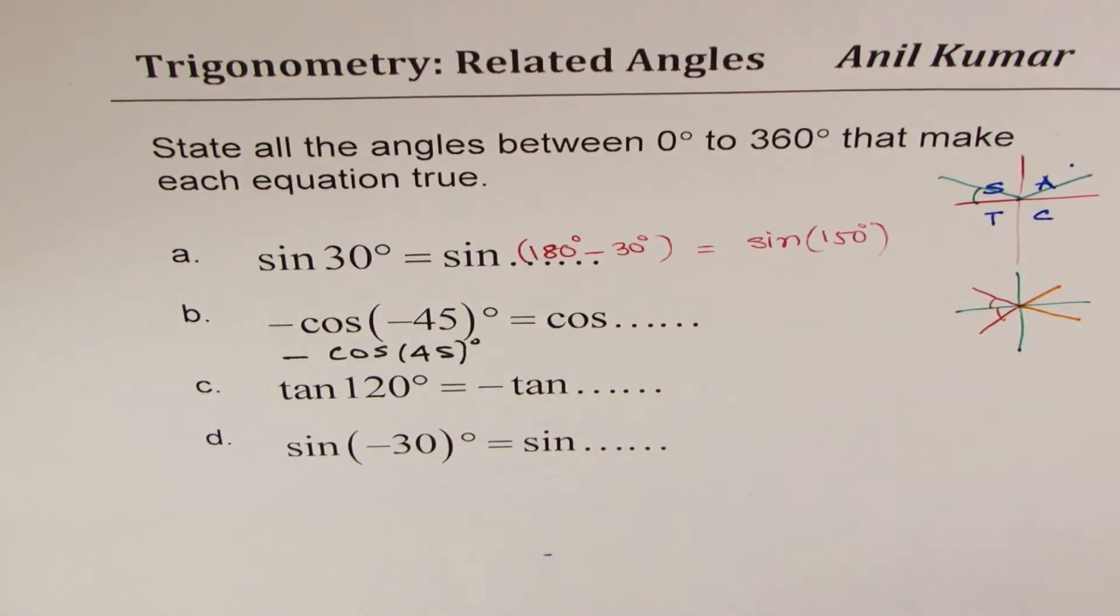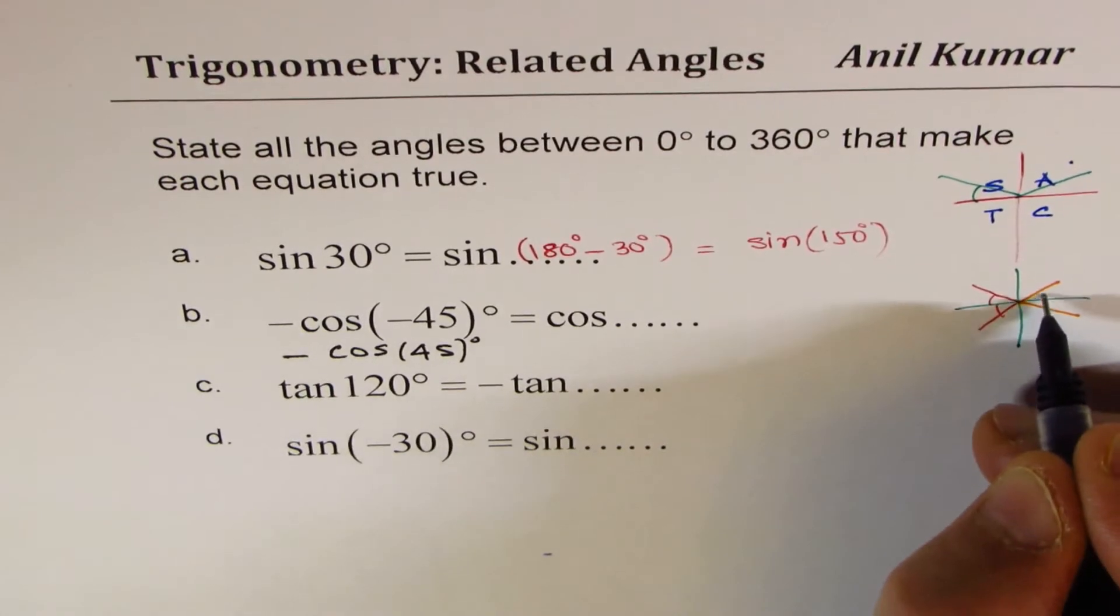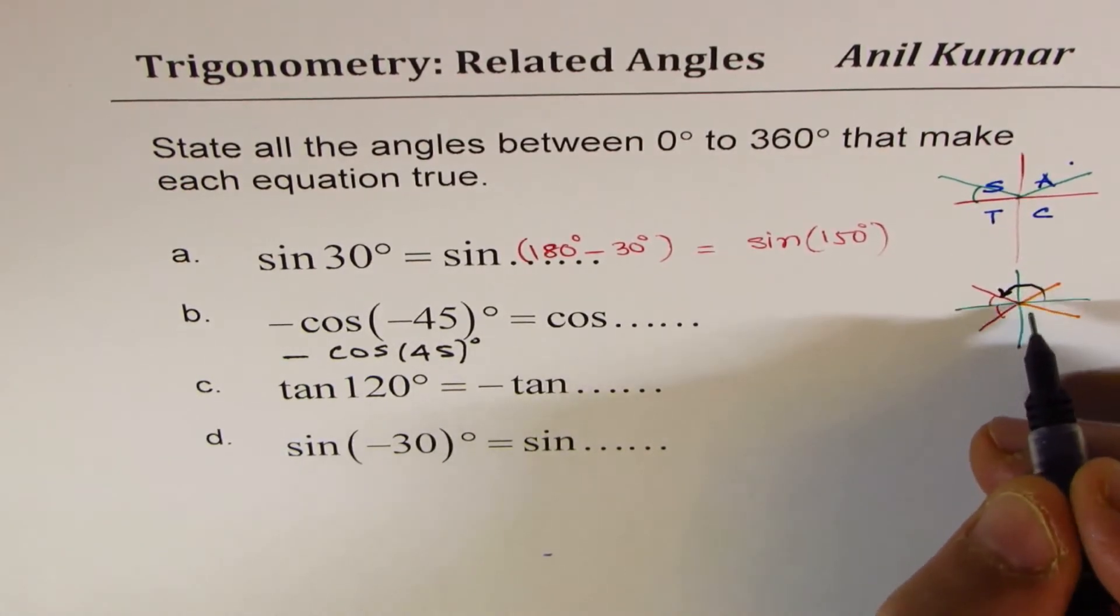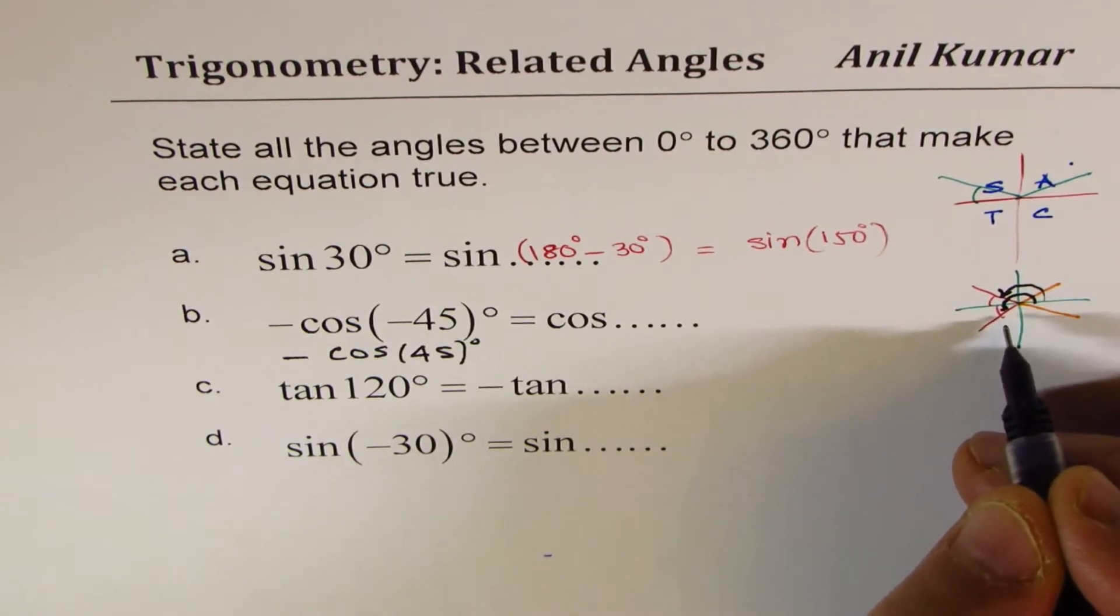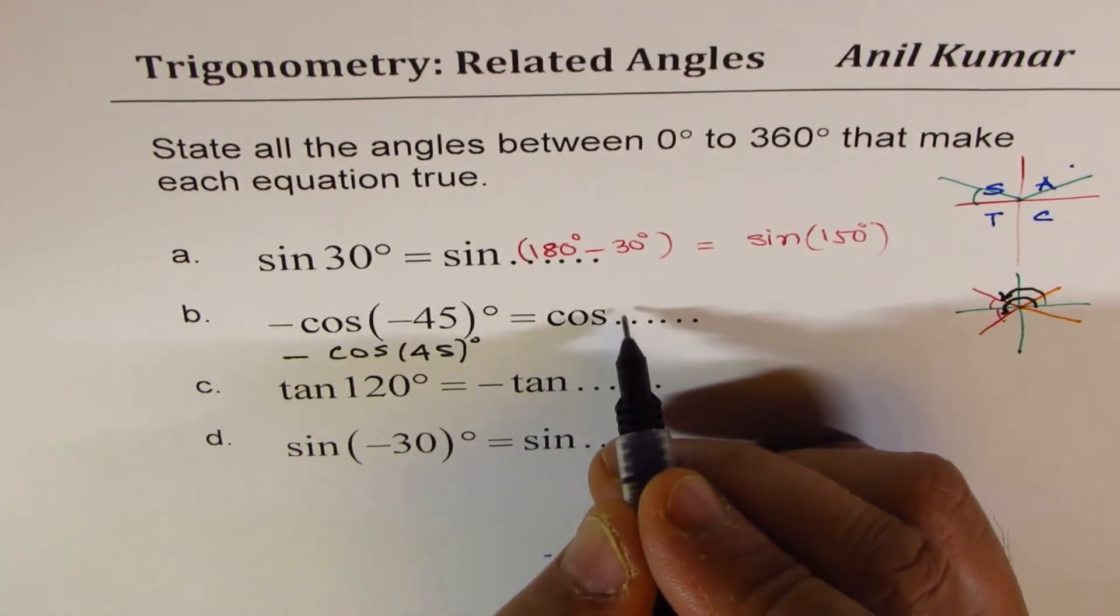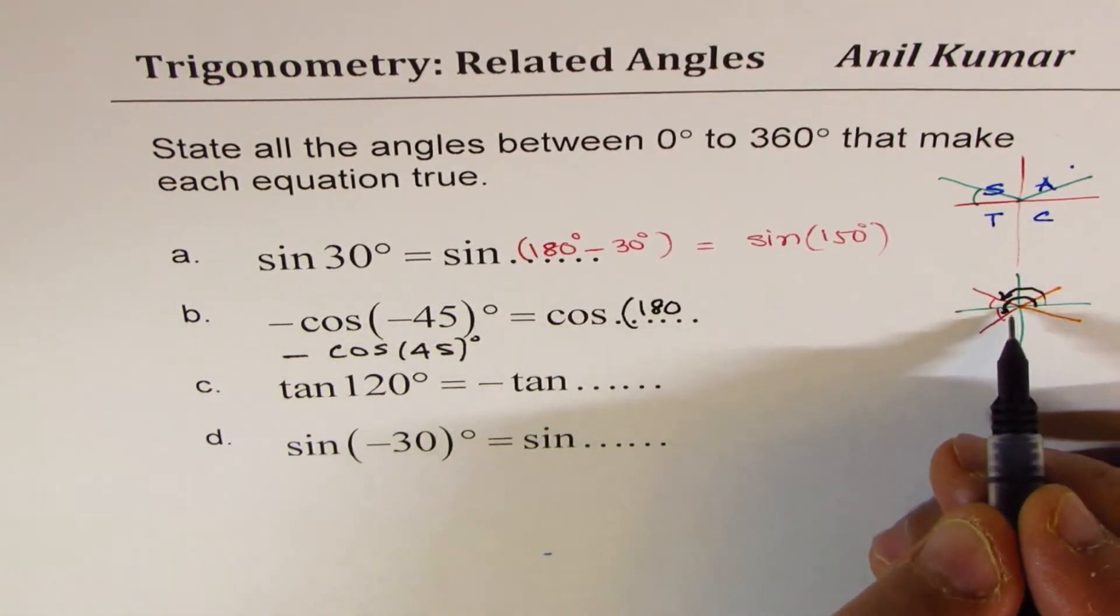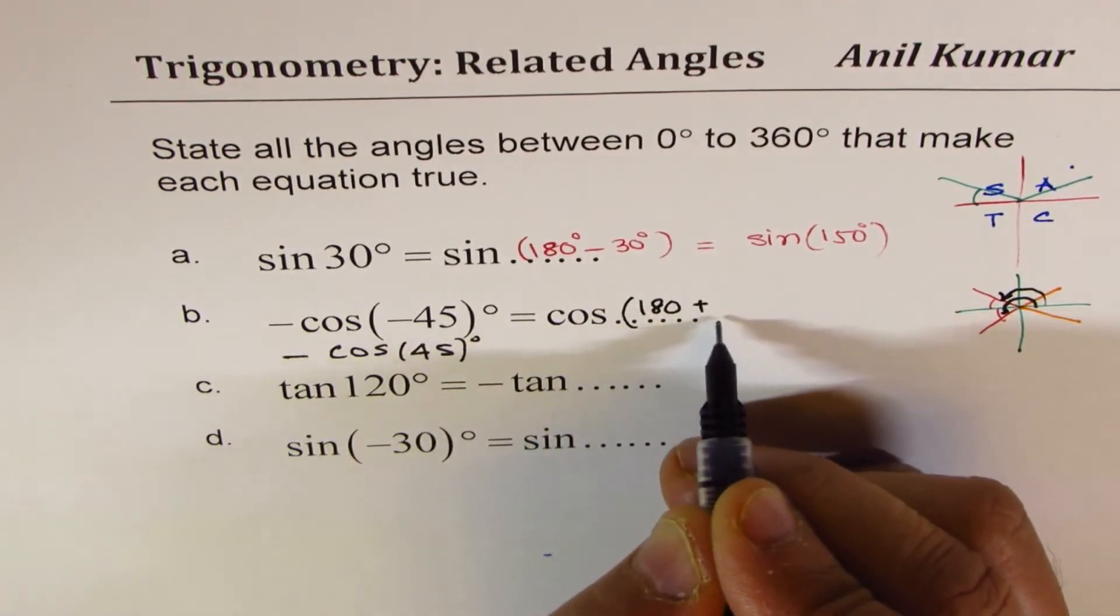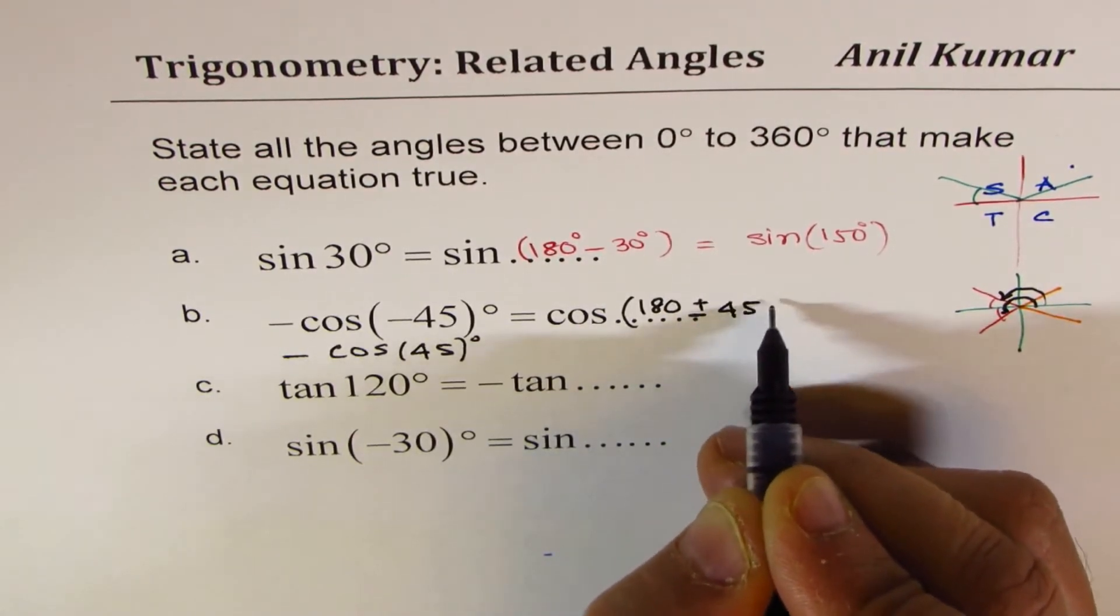And therefore, the angle which we are looking for here is either 180 minus 45 or 180 plus 45. So we get two solutions here. One of them will be cos of 180 plus 45 and minus 45 degrees.